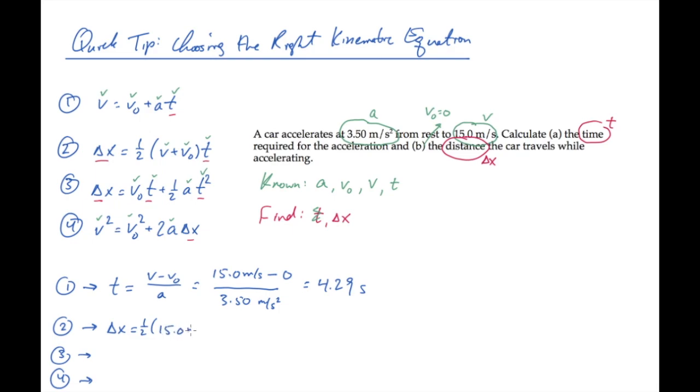Using equation two looks like this. It gives you an answer of 32.2 meters. Equation three is similar. The initial velocity is zero. Substitute the values, and you get the same number, 32.2 meters.